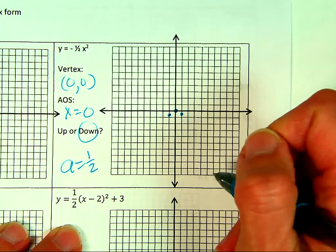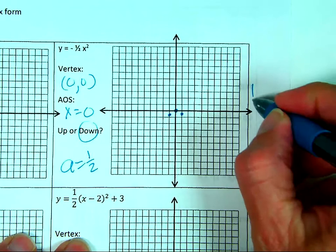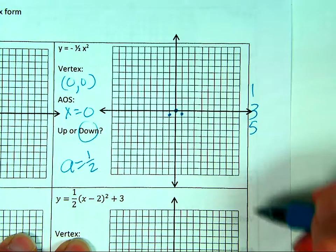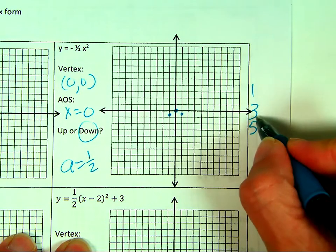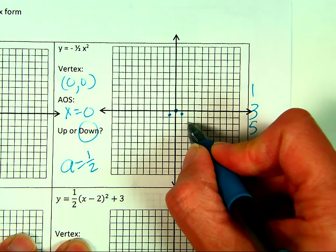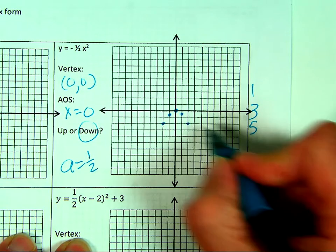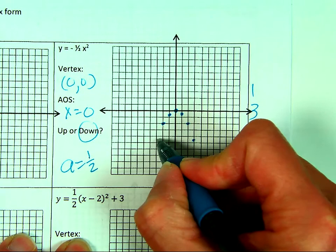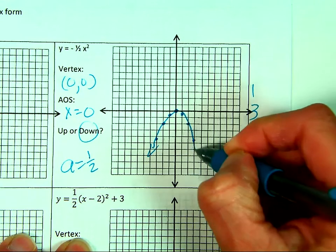The pattern for one half is half of 1, 3, 5. So I go over 1 more and down 1.5 on both sides, then over 1 more and down 2.5. Connect the dots and done.